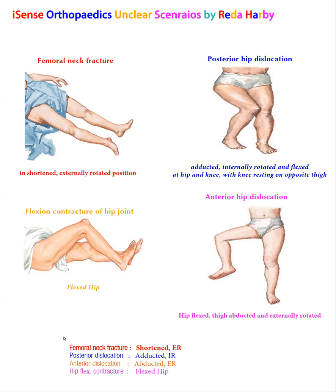In a simple short summary: femoral neck intertrochanteric fracture — the limb will be shortened and externally rotated. Posterior dislocation — the limb will be adducted and internally rotated. Anterior hip dislocation — the limb will be abducted and externally rotated. Hip flexion contracture — flexed hip dragging the knee into flexion as well.